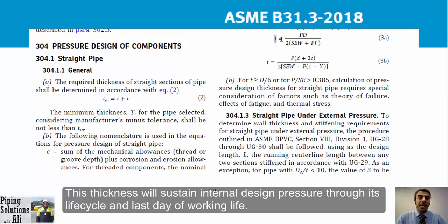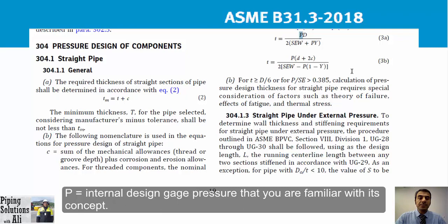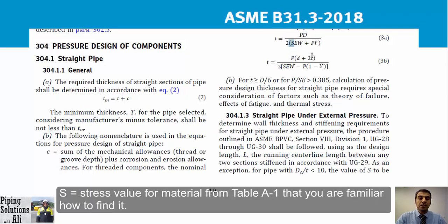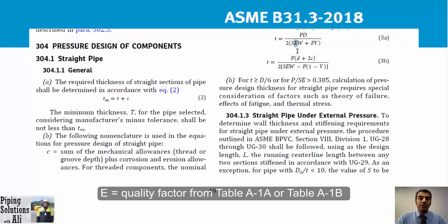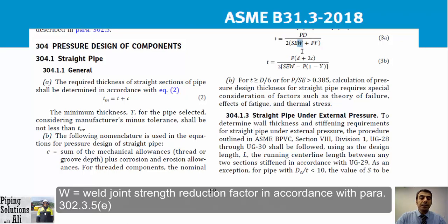In this equation: t is the pressure design thickness that sustains internal design pressure over the pipe's working life. c is the sum of mechanical allowances plus corrosion and erosion allowances. P is the internal design gauge pressure. D is the outside diameter of the pipe. S is the stress value for the material from Table A-1. E is the quality factor from Table A-1A or Table A-1B.